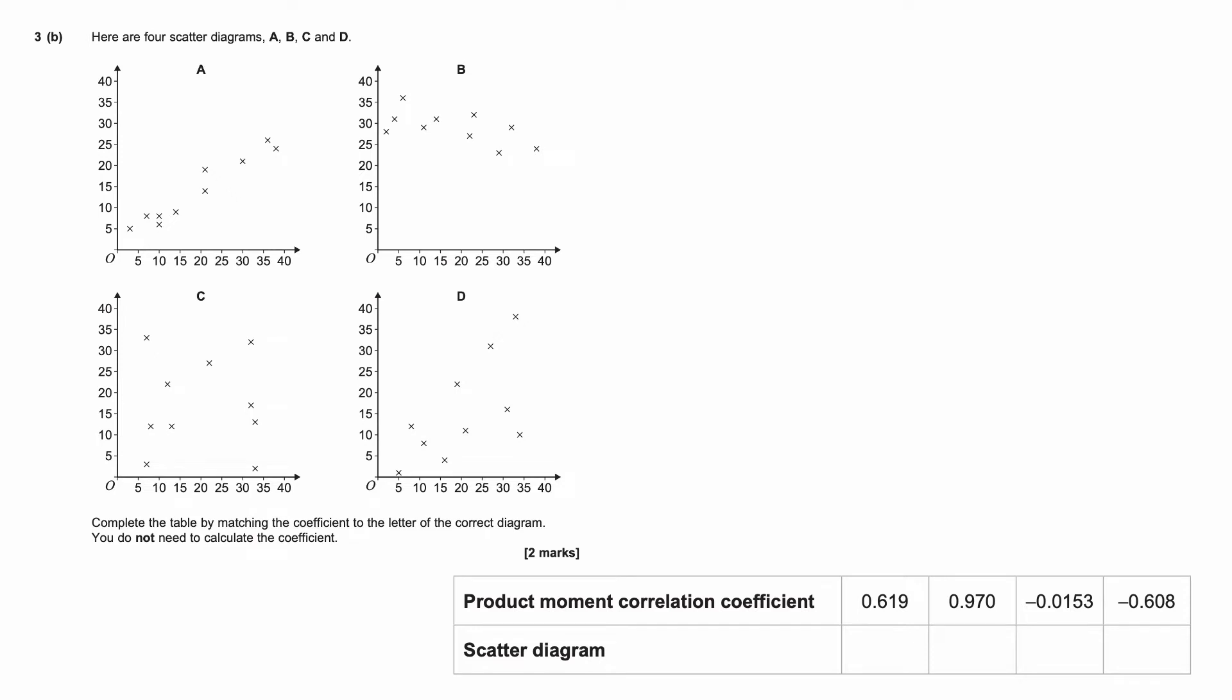So this is the next part of the question. And we've got to match up these scatter diagrams to these PMCCs. So the first thing we can notice is which ones are positive and which ones are negative. So A is going up, that's a positive one. And D, I think, is going up. It's not as tightly knit together as A, but I still think it's going up. So I'll say that's a positive one.